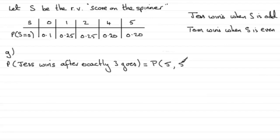But then if we had that situation, we've got a win within two goes. So we mustn't get a five here. So we'll say not a five. But that means that on the third go, Jess must get a five on the spinner.